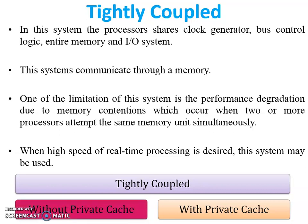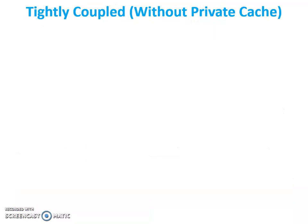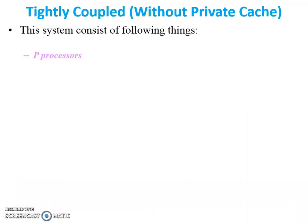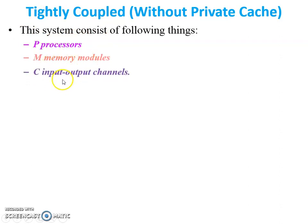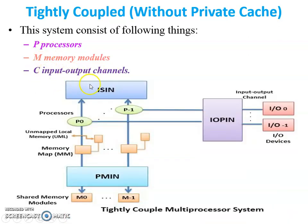Tightly coupled without private cache: the system consists of the following components. Processors — since it is a multiprocessor, a number of processors are available. M represents memory modules, and C represents input/output channels, through which processors are connected. In the diagram, M stands for memory modules, P for processors, and C for input/output channels.